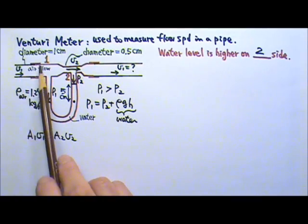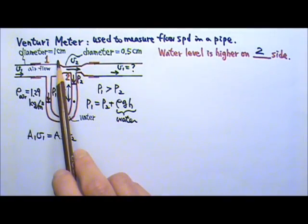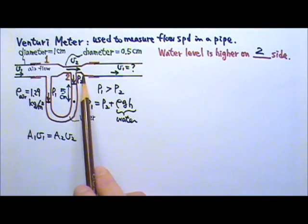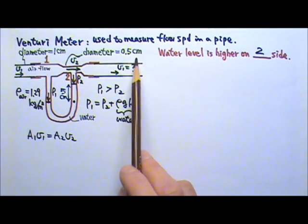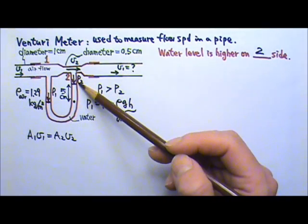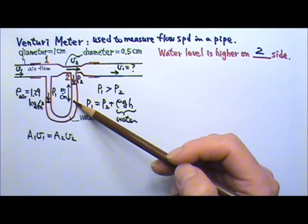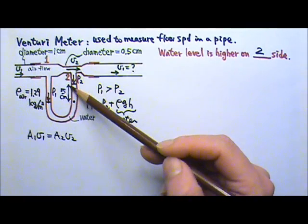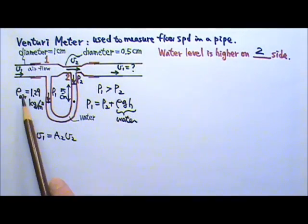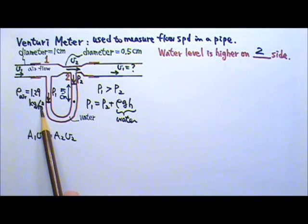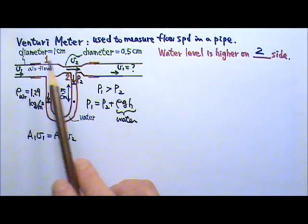Suppose that the diameter of the pipe is 1 centimeter. The diameter of the constriction is 0.5 centimeters. The water column on the right side is 5 centimeters taller than the left side. The density of the flowing air is 1.29 kilograms per meter cubed. Find the speed V1.